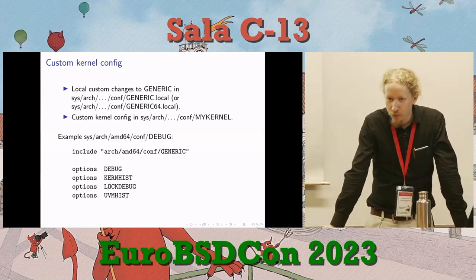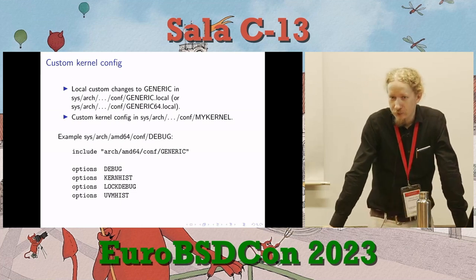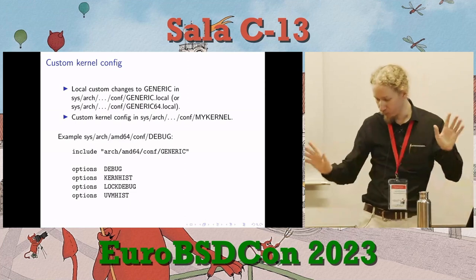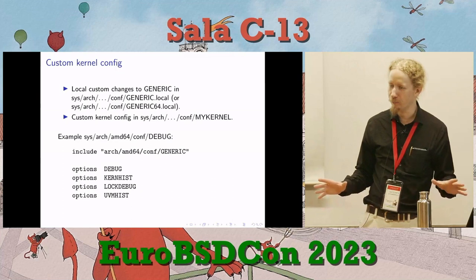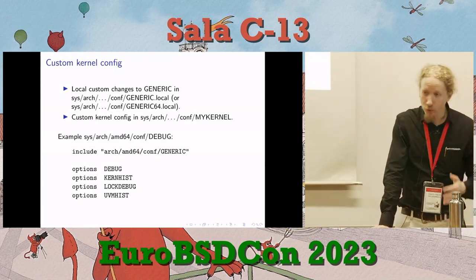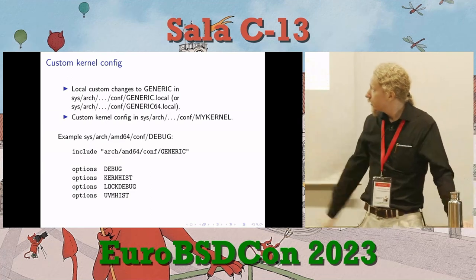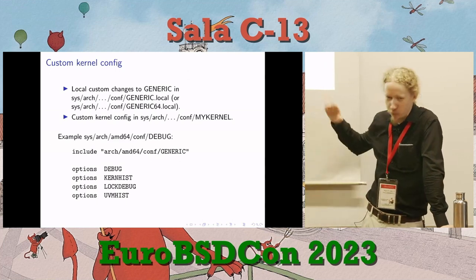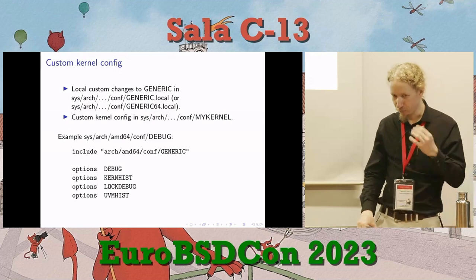If you want to make a custom kernel config, you can put customizations in generic.local — a file the generic kernel config automatically looks at if it's there, which will never have a merge conflict when you update from CVS, Git, or Mercurial. Or you can just create a new kernel config — call it, say, 'debug'. This is what I have in my debug kernel — just to turn on some debug options so I get some diagnostics while doing driver debugging.